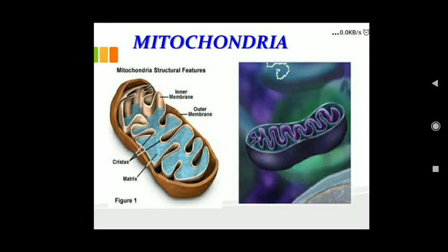The inner membrane is deeply folded, as you can see here. The inner membrane increases the surface area for ATP synthesis. This ATP is known as the energy currency of the cell. Mitochondria produce ATP, that is adenosine triphosphate.